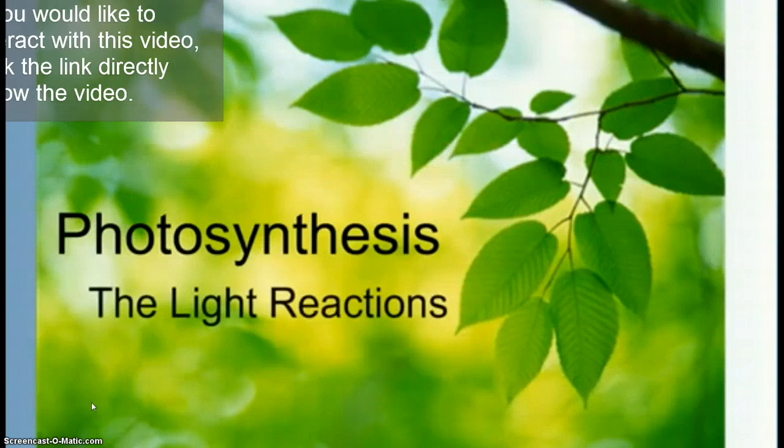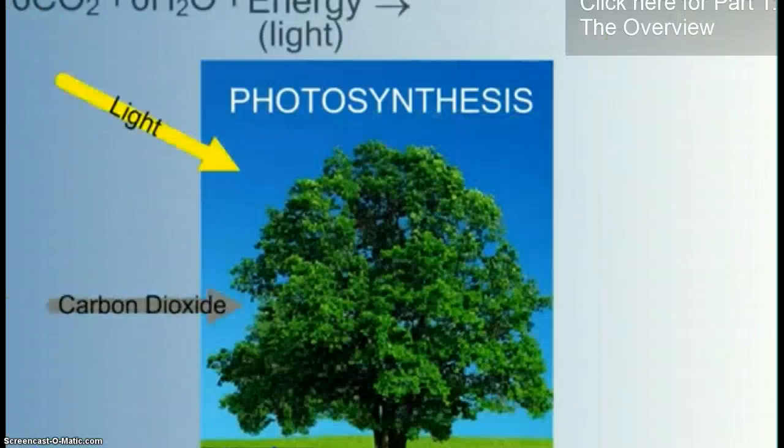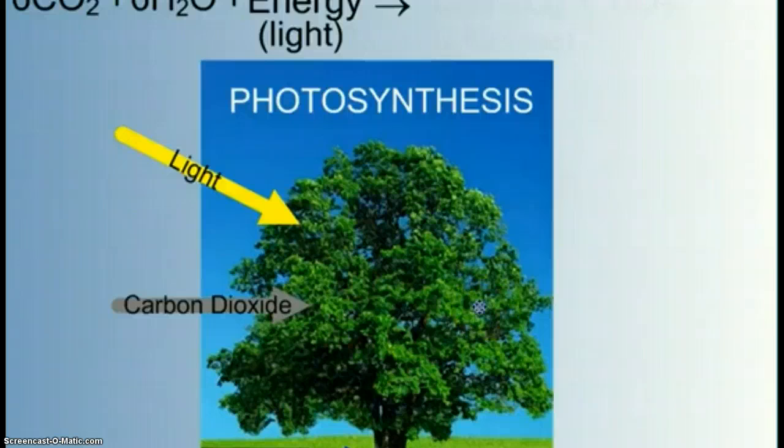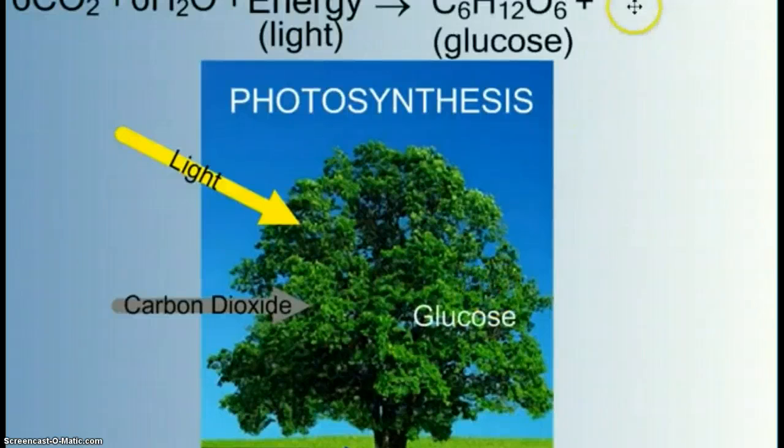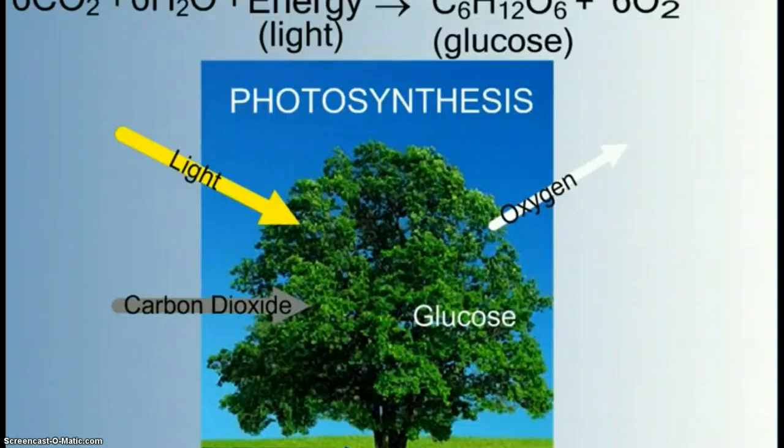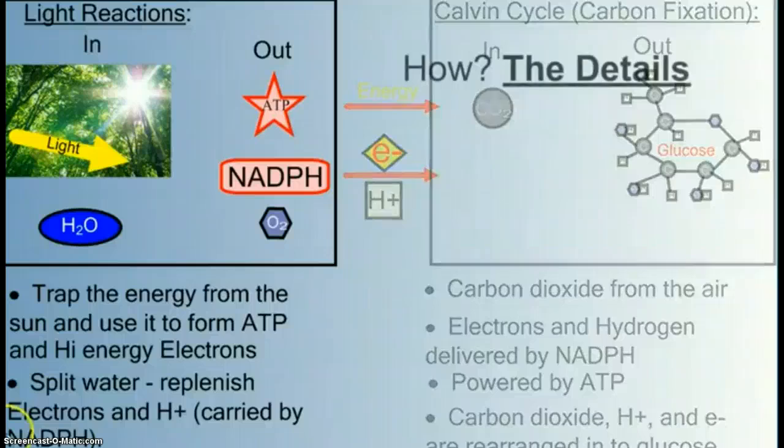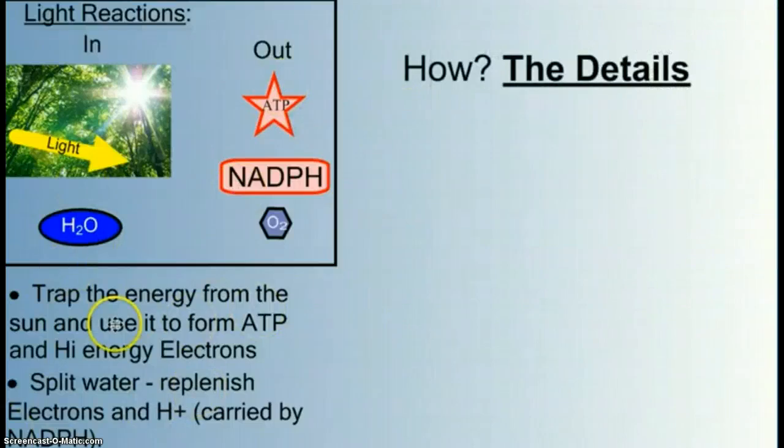Welcome to our second video in our series on photosynthesis. In this video we're going to take a closer look at the light reactions. Recall from our video overview that in photosynthesis we take in light, carbon dioxide, and water to build sugars and release oxygen as a waste product. Photosynthesis occurs in two distinct sets of reactions: the light reactions and the Calvin cycle.